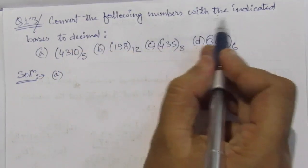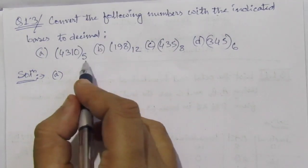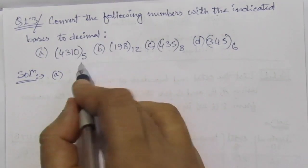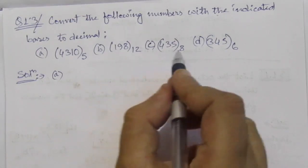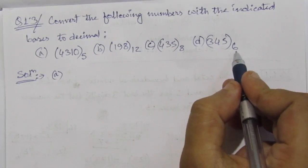First of all, it is asked to convert the following numbers with the indicated bases to decimal. That means their base is 5 here, base is 12 here, base is 8 (that is this octal number), and here base is 6.